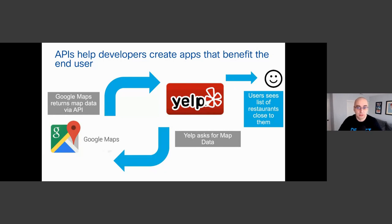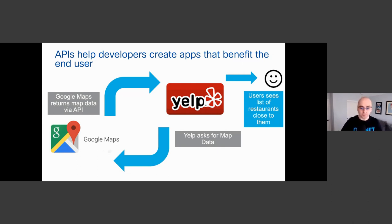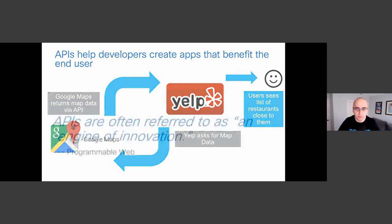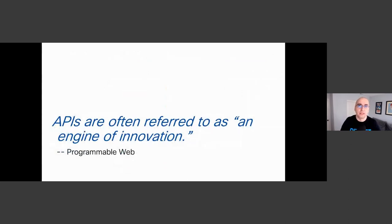Same thing with applications like Uber — to get location information from a location API, they don't need to build a mapping service themselves. There might be a cost associated with getting this information, but it's much cheaper than creating and maintaining a whole mapping or location service. Because of this, APIs are often referred to as an engine of innovation, because the opportunities once you start exposing data over APIs are unlimited — everyone can take advantage of these interfaces and build their own applications and solutions on top of them.